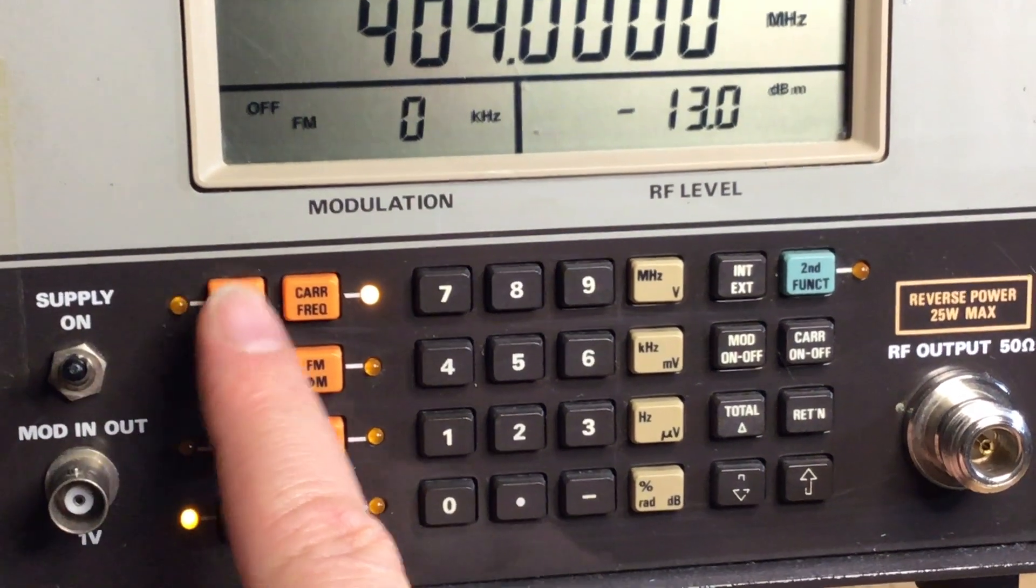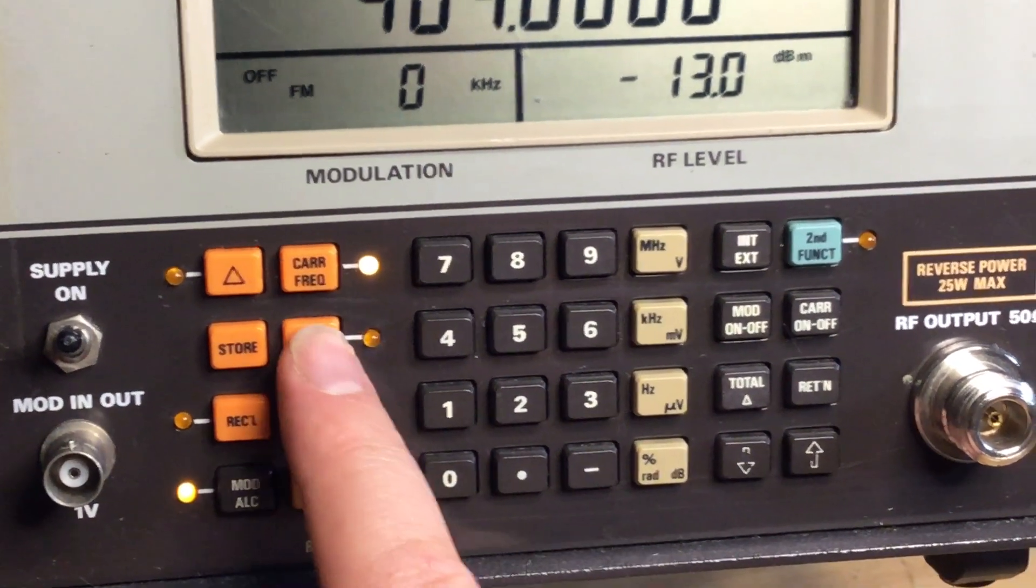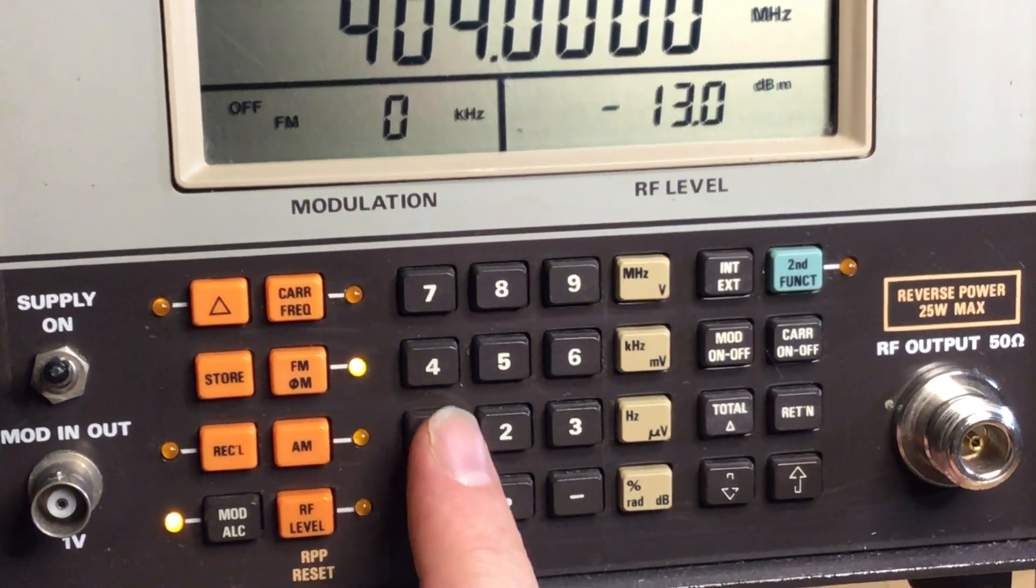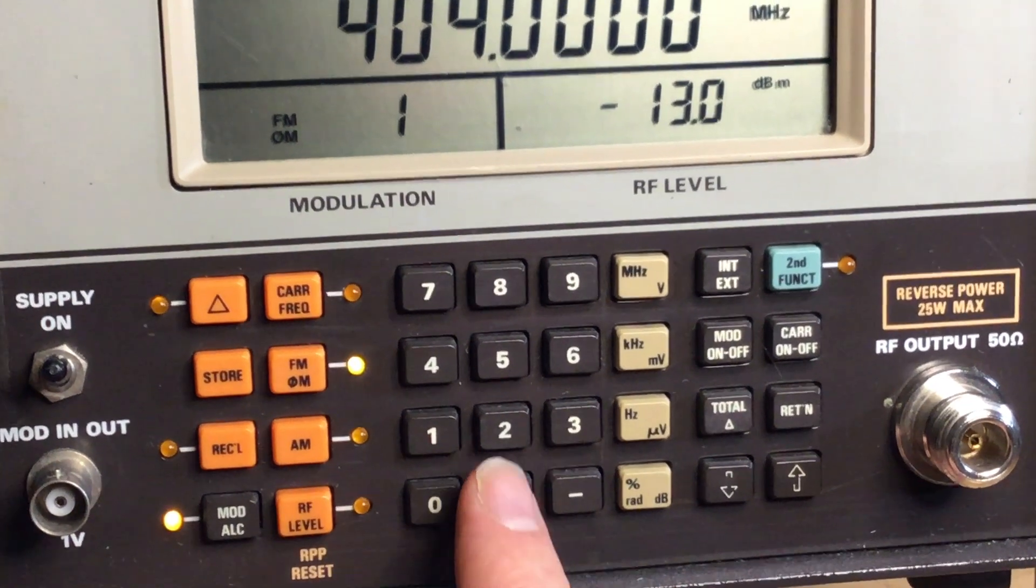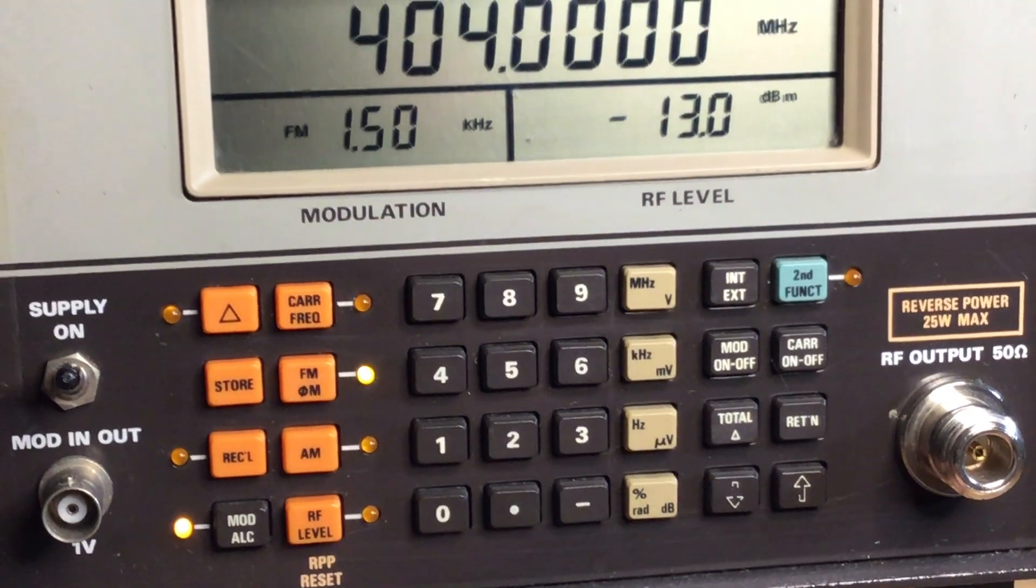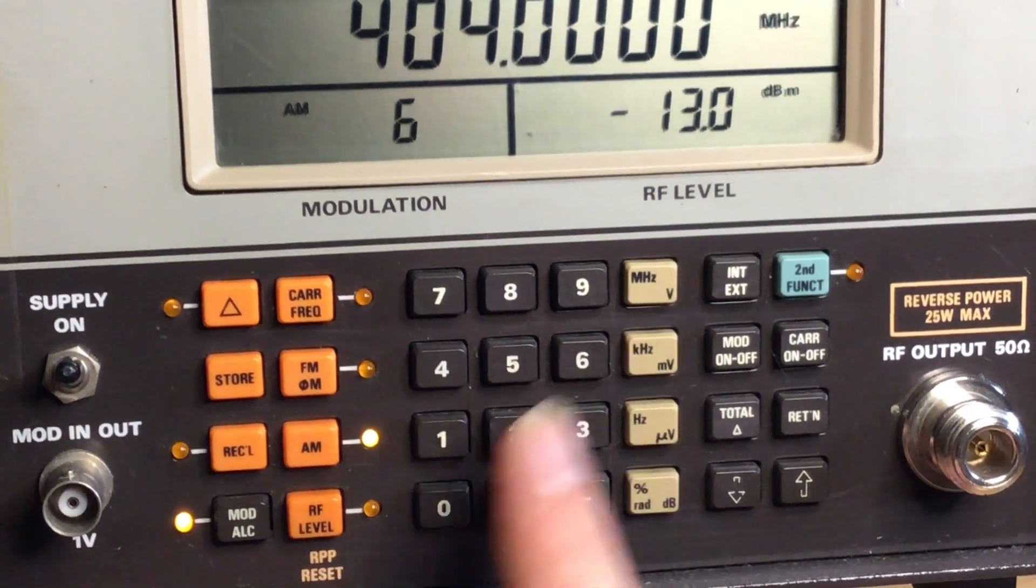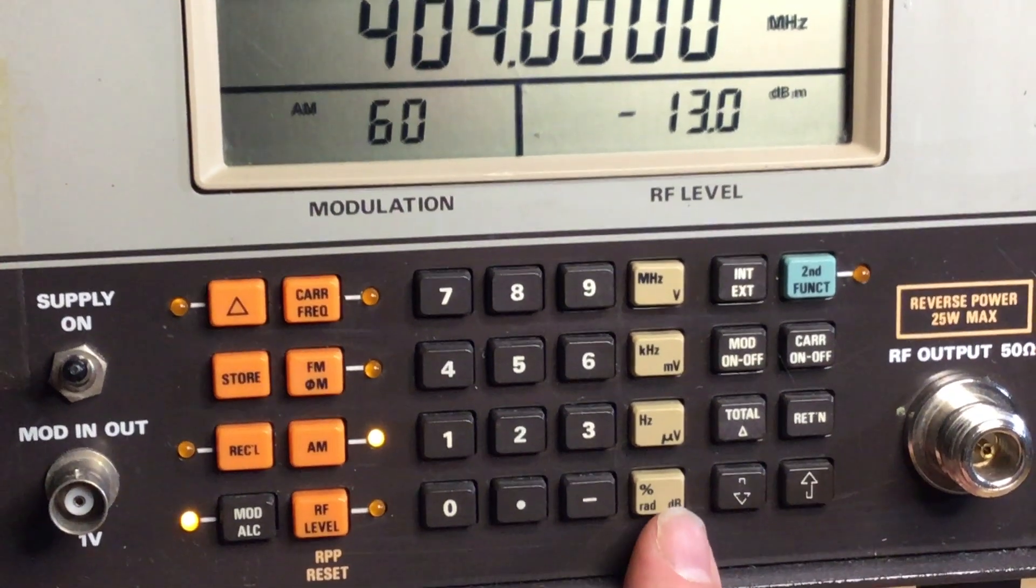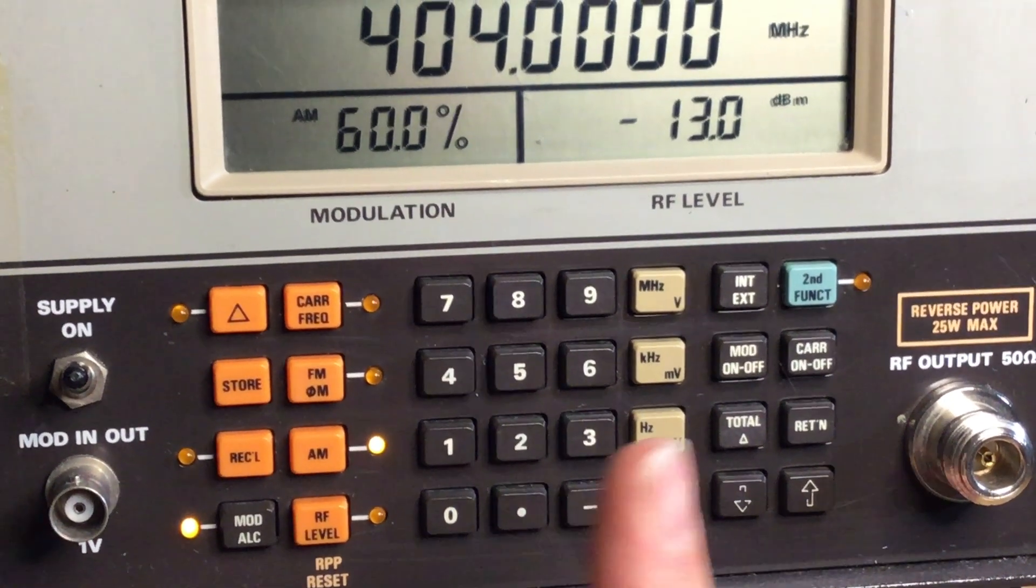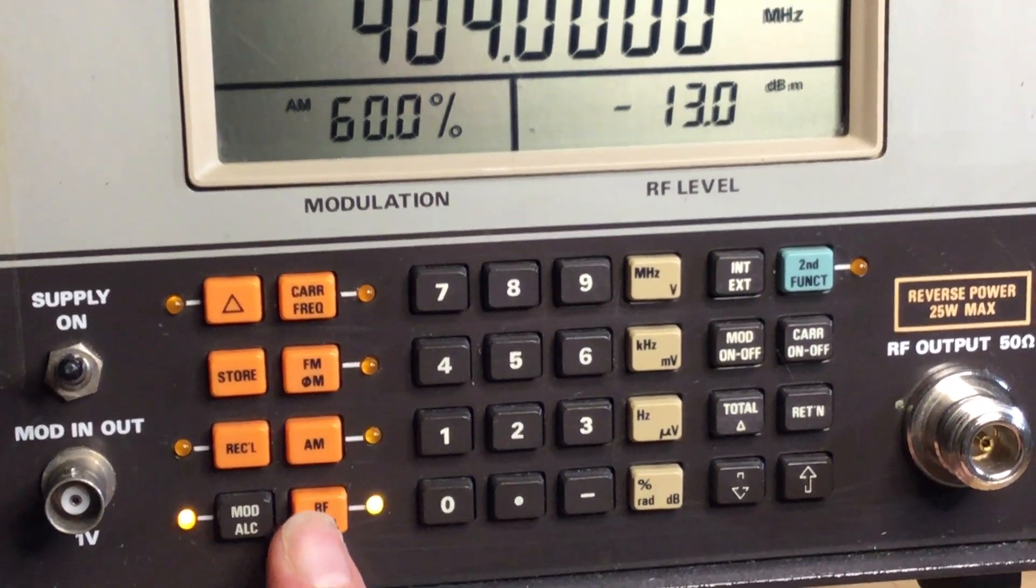In addition to that, we've got FM, so we can set up FM mod. I'll put in 1.5 kilohertz deviation FM. AM you can then, for example, put 60 percent AM on if you want to do an AM signal. You can change the RF level as well.